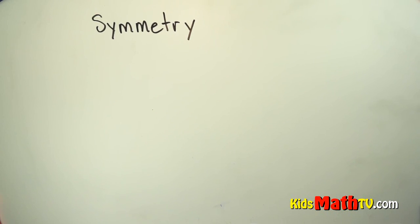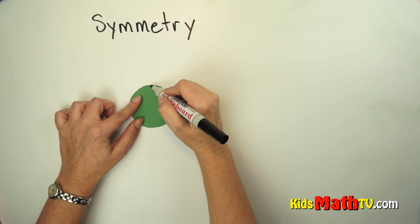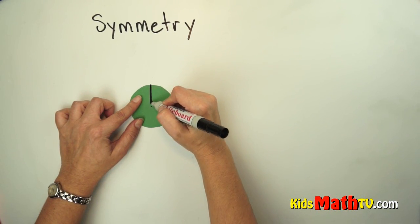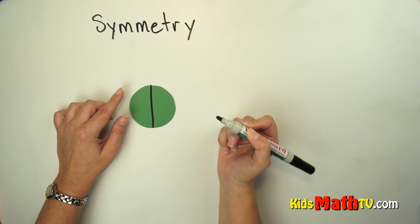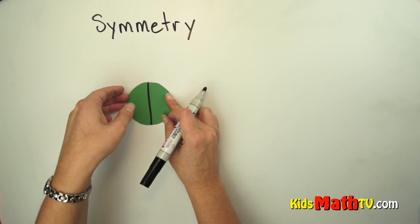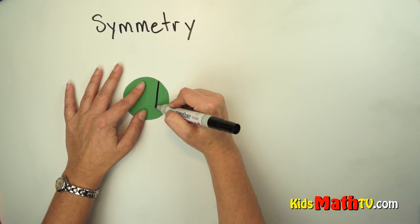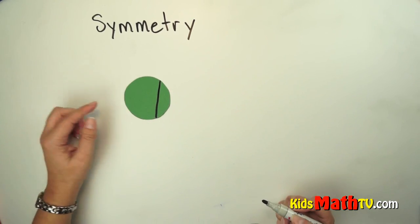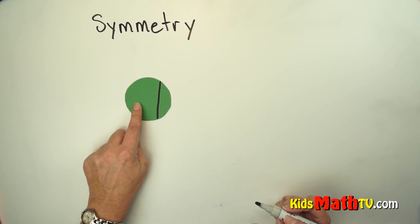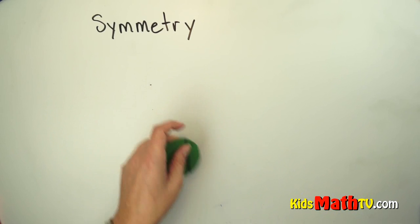A circle has many lines of symmetry. Anytime I go straight from one side to the other through the center, that's a line of symmetry. However, if I were to go across like this, this is not the same shape and size as that one — so this is not a line of symmetry.